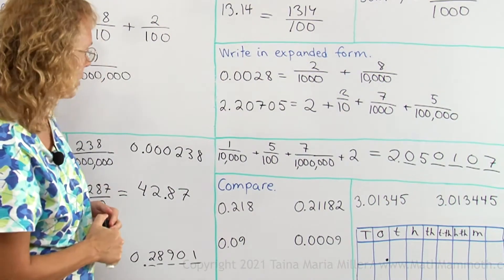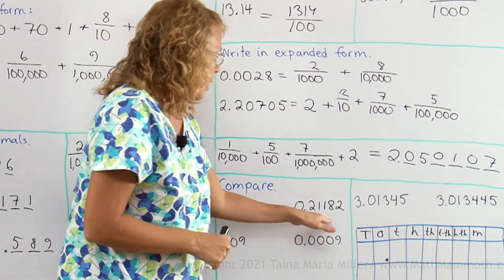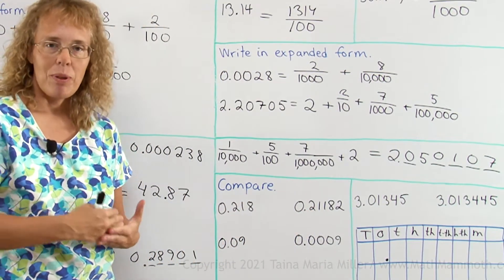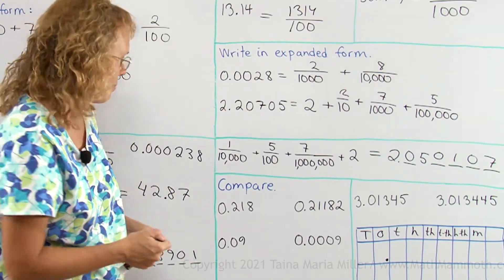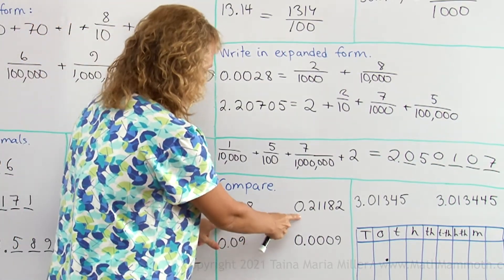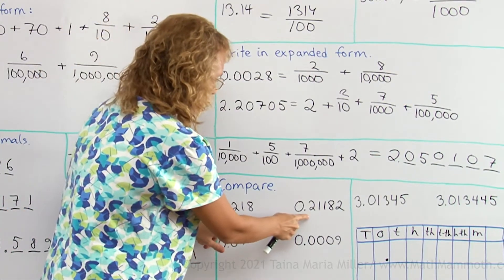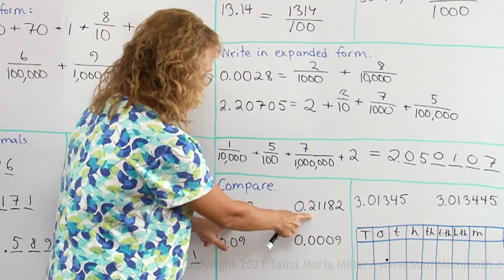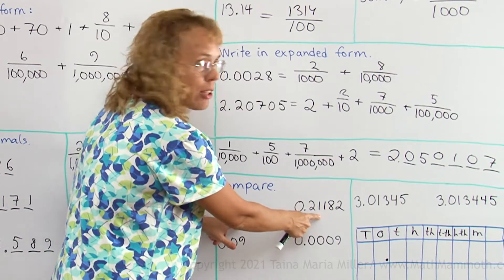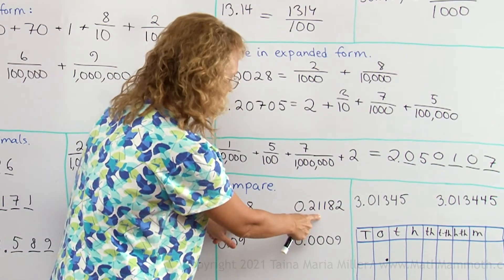Lastly, we will compare decimals a little bit. The basic idea is that we compare them place by place. So these two numbers both have the same amount of ones, or units. They have the same amount of tenths also, two tenths, and then the same amount of hundredths, one in both cases.